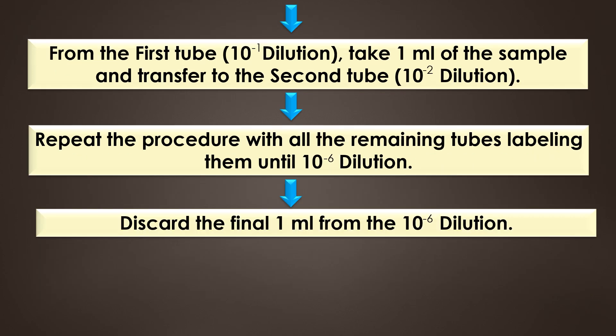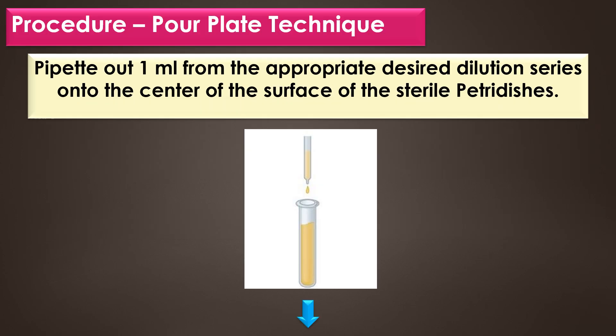From the first tube — the 10⁻¹ dilution — take 1 ml of the sample and transfer it to the second tube for the 10⁻² dilution. Repeat the procedure with all remaining tubes, labeling them up to the 10⁻⁶ dilution, and discard the final 1 ml from the 10⁻⁶ dilution.